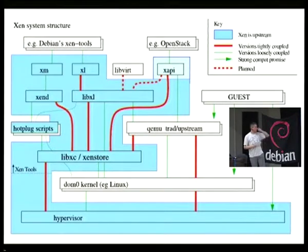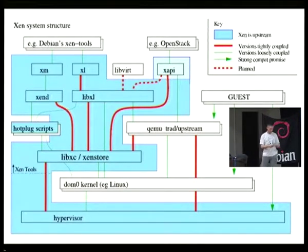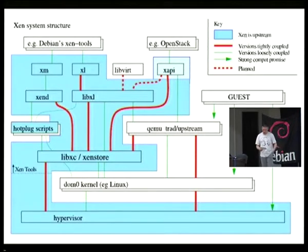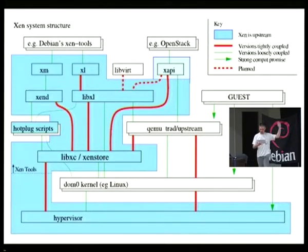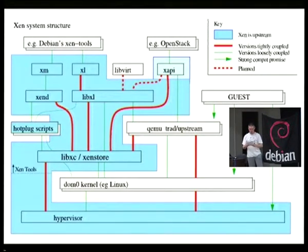The code for which we're upstream comes in two big pieces. The first is the Xen hypervisor itself right here at the bottom, which you will have all heard of. And the second is this collection of libraries, scripts, daemons, supporting tools, et cetera, which allow the host to do the work of managing and supporting the system and all the guests.